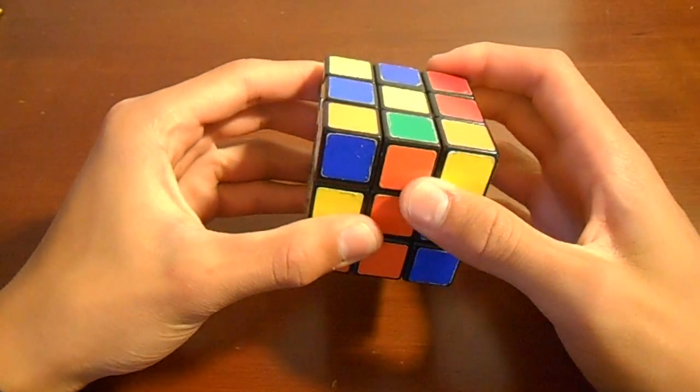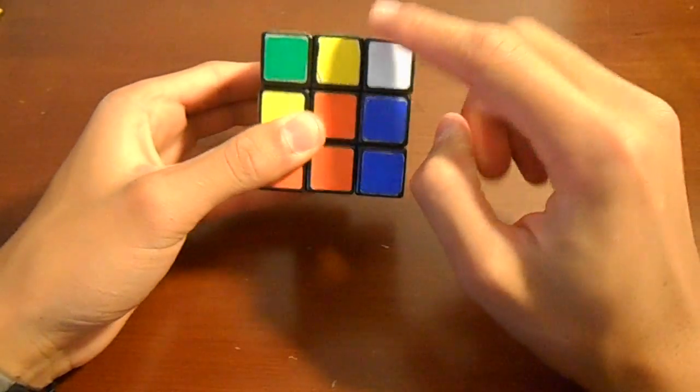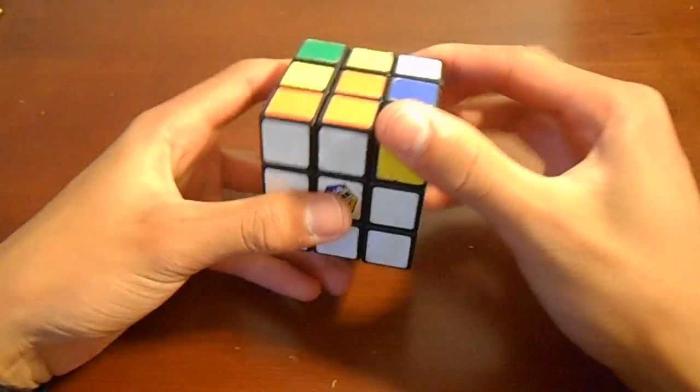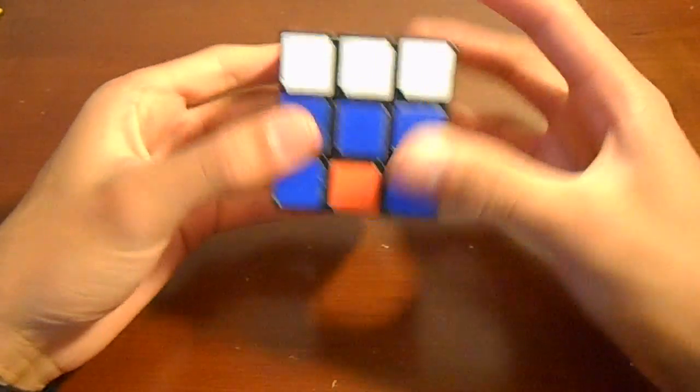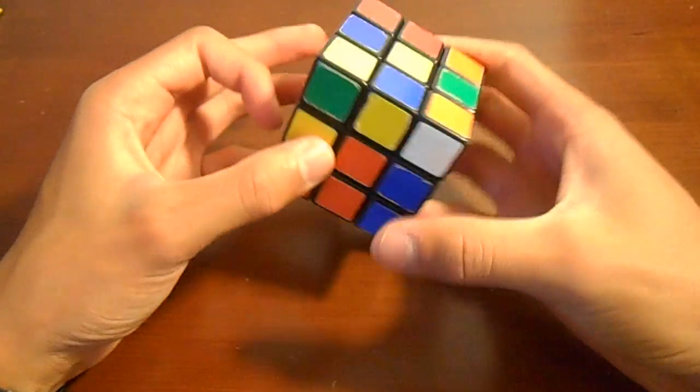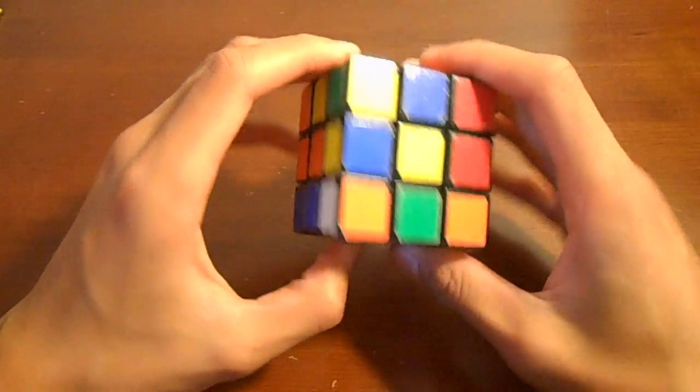And now we're going to move this corner piece back over the corner slot, and we're basically going to insert it just like how we did before, if you remember, like that. But if we watch what's actually happening, you can see how these are going to be paired up.